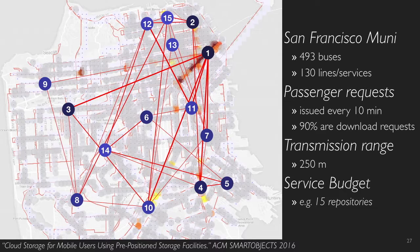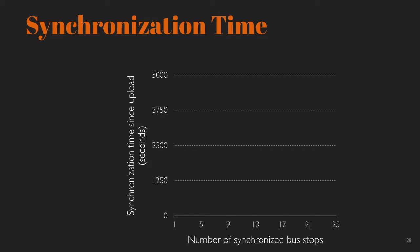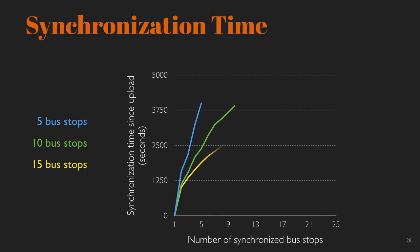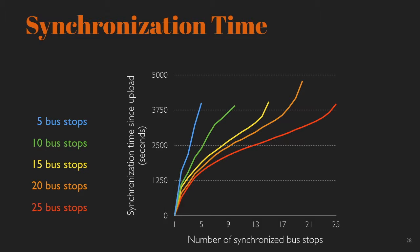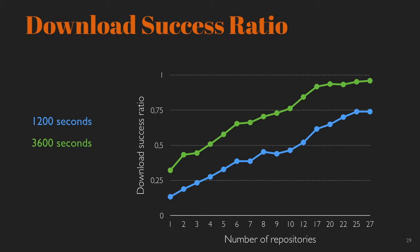We analyzed the dataset made available by the Muni Transit System of San Francisco and recreated the movements of almost 500 buses operated on 130 bus lines. Bus stops and buses are equipped with wireless communication capabilities with a transmission range of 250 meters. Upload or download requests are made every 10 minutes; 90% of requests are download requests while 10% are file uploads. Solving the maximal covering location problem for a budget of 15 repositories gives a specific placement, where the thickness of the red lines represents the capacity resulting from buses connecting the 15 repositories.